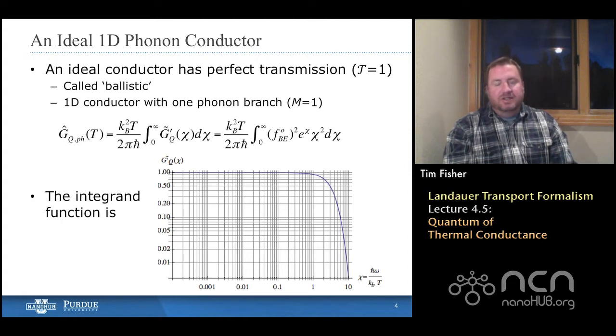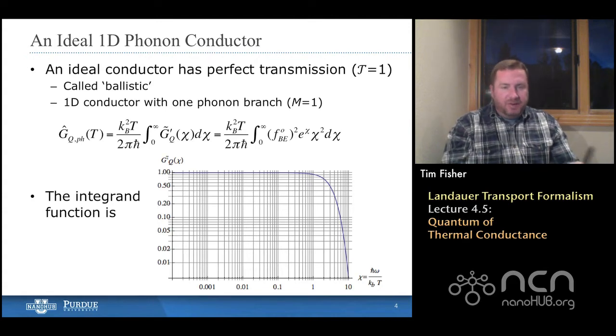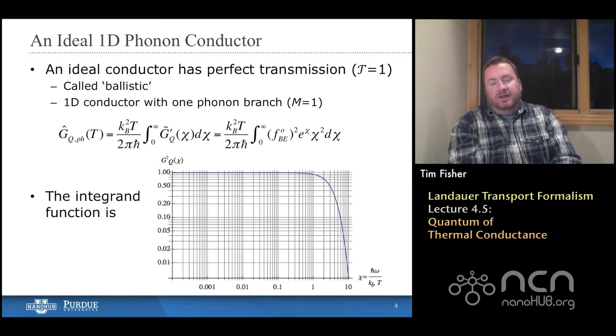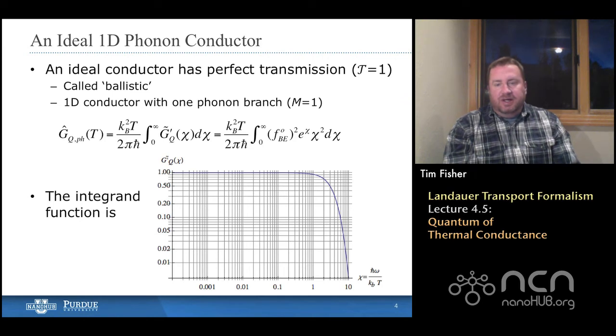It's a fairly simple integral. We have a square of the Bose-Einstein distribution function, so that may be a little bit complicated. But in fact, it's something that we can successfully integrate analytically. And so we expect that the term that's integrated will have a value of roughly 1, of order 1, because the highest magnitude of this normalized spectral conductance is 1. And so we expect the area under this curve to be approximately 1. It's a little bit larger than that.